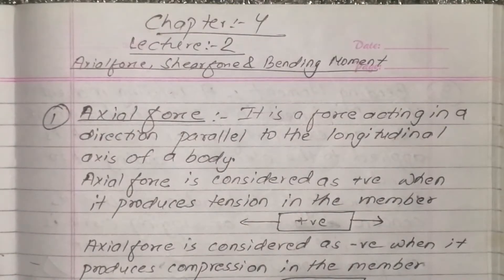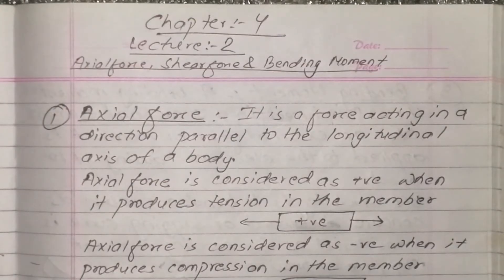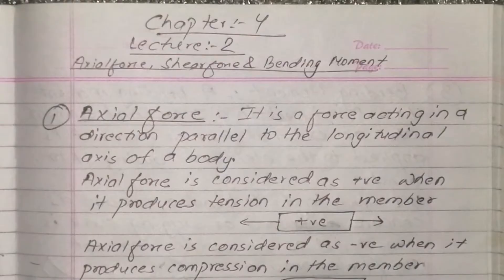In Diploma in Civil Engineering 4th Semester, Mechanics of Structural, Chapter 2 — in Lecture 2 we will discuss the topics covered. In Lecture 1 we discussed the point of contra-flexure. In Lecture 2 we will cover Axial Force, Shear Force, and Bending Moment Diagram.